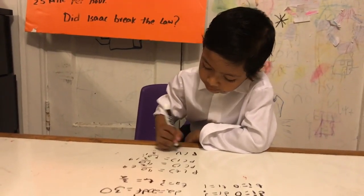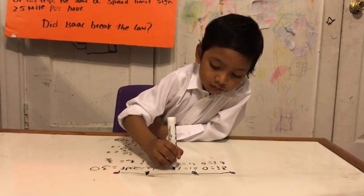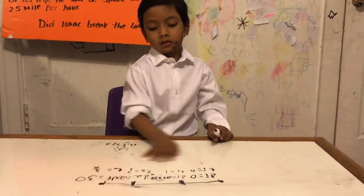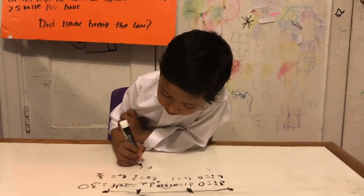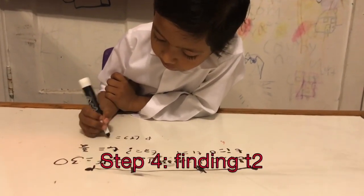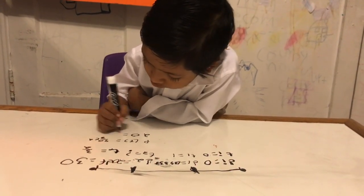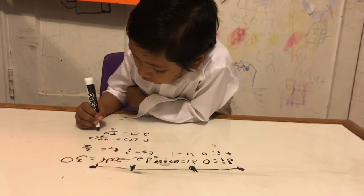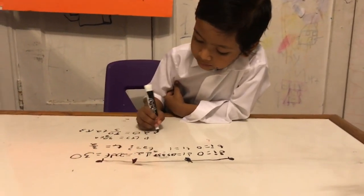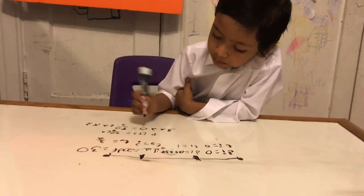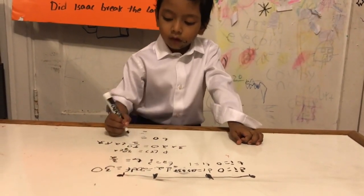So p(1) is just 40 over 3 times 1, which is 40 over 3. Now we replace p(t) with 20: 20 equals 40 over 3t squared. We multiply both sides by 3. 3 times 20 equals 60, so 60 equals 40t squared.